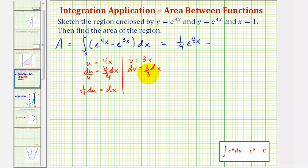We have 1 third dv equals dx. So when integrating e to the 3x, we have an extra factor of 1 third. So we have minus 1 third e to the 3x. And I will evaluate this at x equals 1 and then 0 and then find the difference.